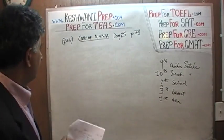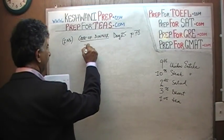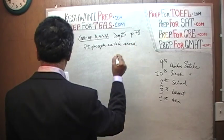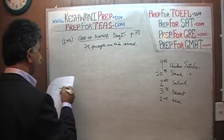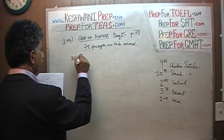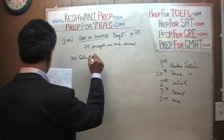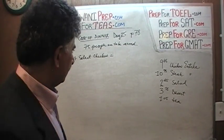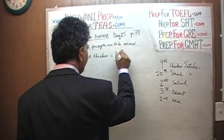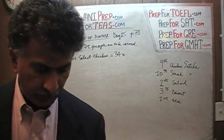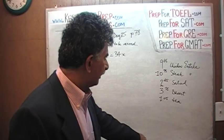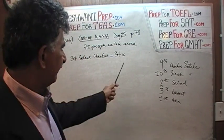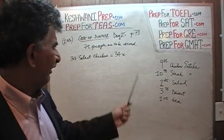We are told that 75 people are to be served. We are further told that 34 of them select the chicken entrée. So that's 34 times — and this is where the approximation will begin, this is where the game will begin. How much is chicken? Chicken is $9.65. We are not going to waste our time figuring out the exact figure here. 9.65 times 34 would be annoying.